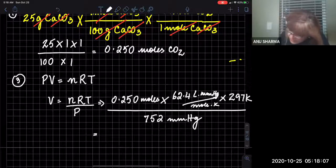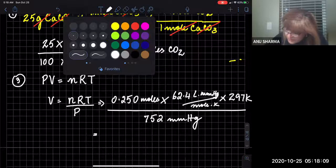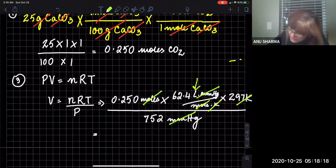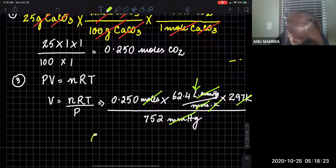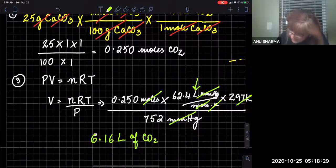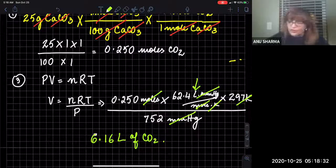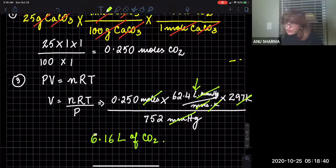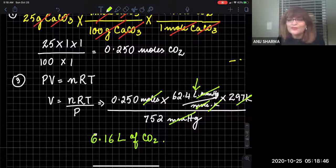When you do the math, moles cancel out, millimeters of mercury cancel out, and K cancels out, leaving only the unit of liters. The answer comes out to 6.16 liters of carbon dioxide. This is how you use stoichiometry and the ideal gas law combined together. I hope that was easy — thank you for watching, bye-bye!